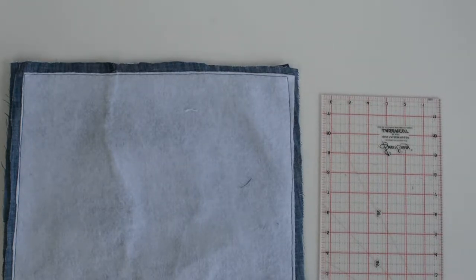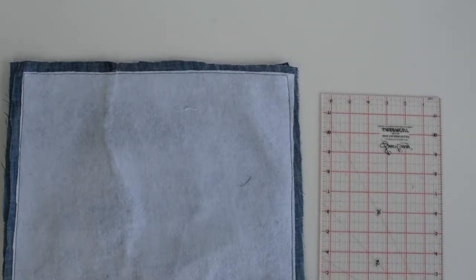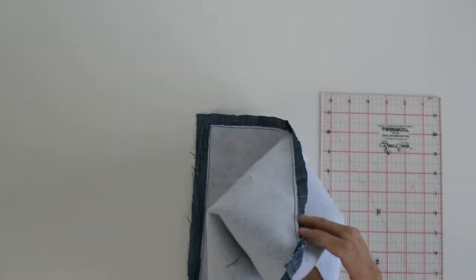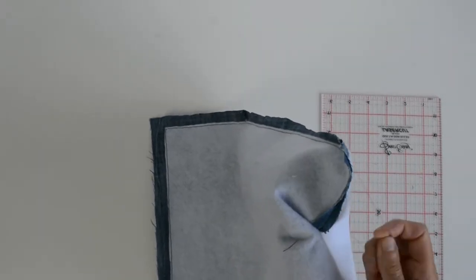The first method for boxing corners is to fold your fabric so the two seams meet. I'm going to pull my seam allowance apart.